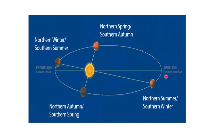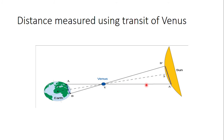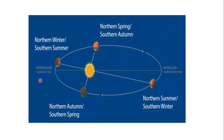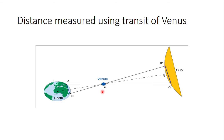So, the farthest point of the earth from the sun — when the earth is at that position — is called aphelion (A-P-H-E-L-I-O-N). And when the earth is closest to the sun, that position is called perihelion. The distance is not constant; it changes as the earth revolves since the path is elliptical. Scientists found the distances at these two positions using Venus transit.